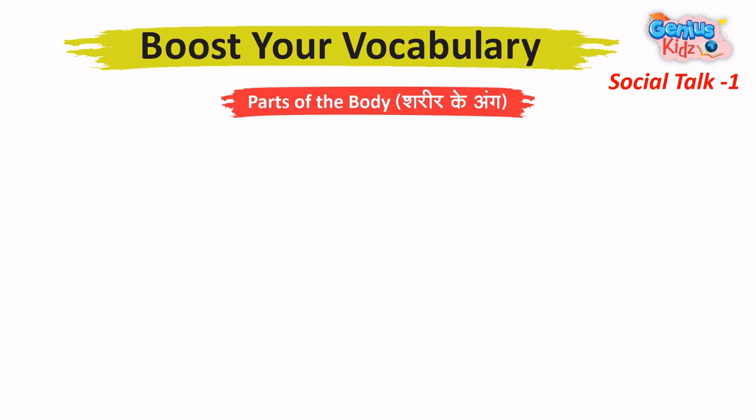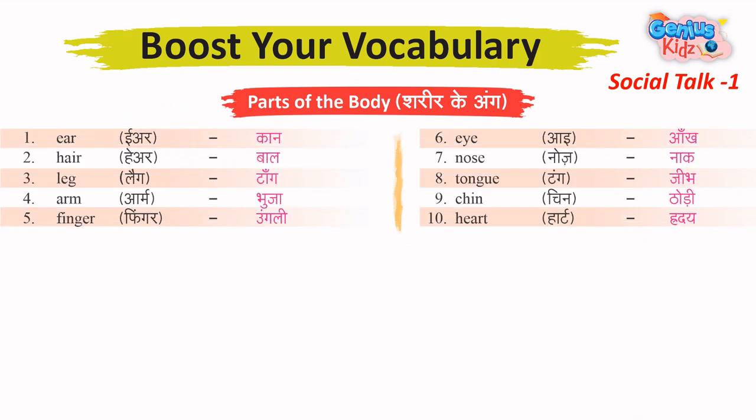Parts of the Body – Shareer ke Ang. 1. Ear – Kaan. 2. Hair – Baal. 3. Leg – Taan. 4. Arm – Bhuja. 5. Finger – Ungli.